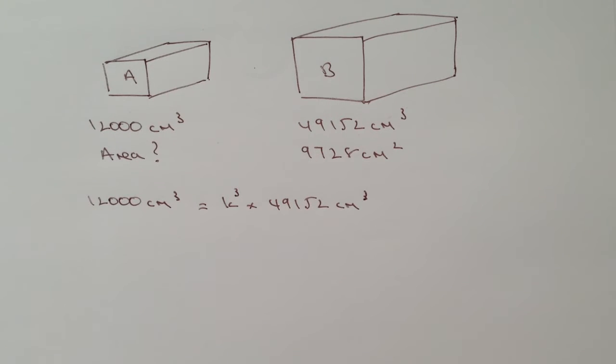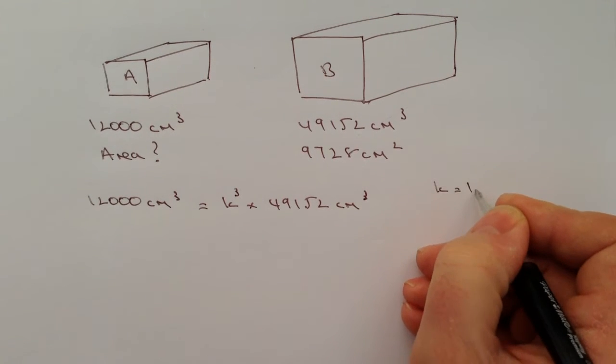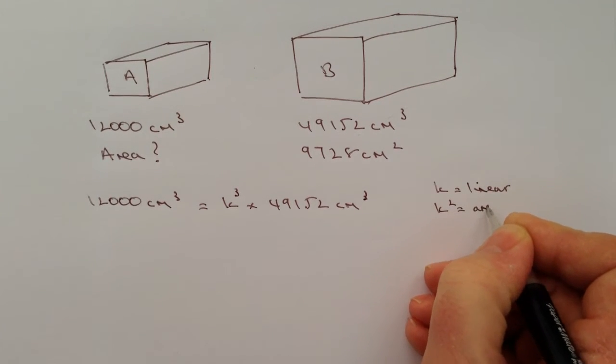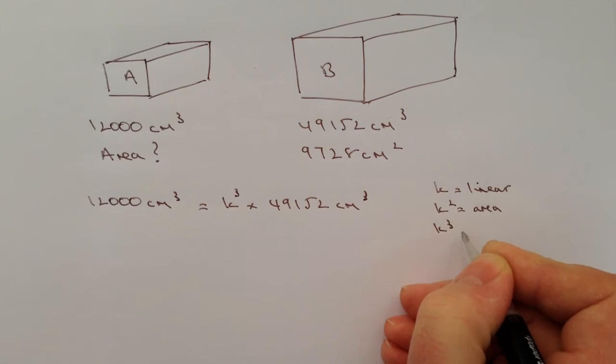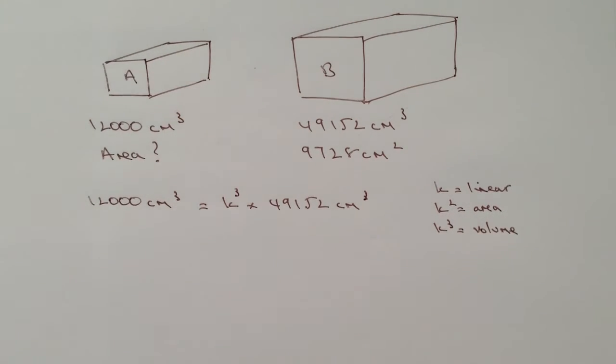Once we've got the value of K then we can use it to work out the surface area, but what we have to remember is that K can either be K for linear, K squared for an area, or K cubed for a volume. Now in this particular case because we're looking at the relationship between the volumes, we're going to use K cubed, but that's okay because using a calculator we can work out the value of K cubed.